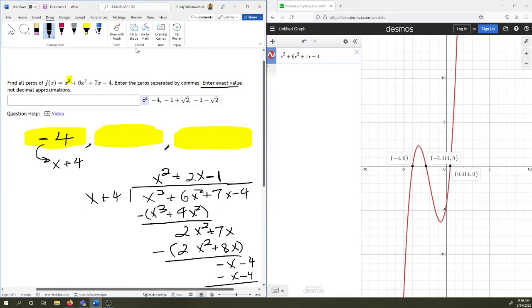So the factored form of this polynomial should be x plus 4 and x squared plus 2x minus 1. This is a multi-step question so I do like to pause at points and do a sanity check. Make sure that we're on track. The fact that we did not get a remainder is a good sign that we are on track with this question.